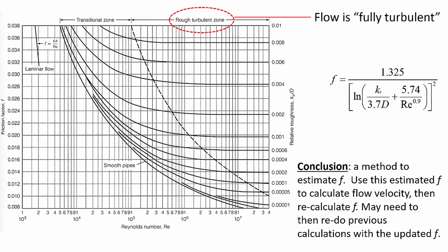Going back to the Moody diagram, remember there are two general zones. To the right of the dashed line, the curves are relatively flat — that is the fully turbulent zone where it doesn't matter what the Reynolds number is, as long as it's big enough. The F value only depends on the relative roughness values on the right-side vertical axis. So as long as some threshold Reynolds number is met, F on the left vertical axis only depends on relative roughness. This is simply a better way of estimating F than choosing a number at random.